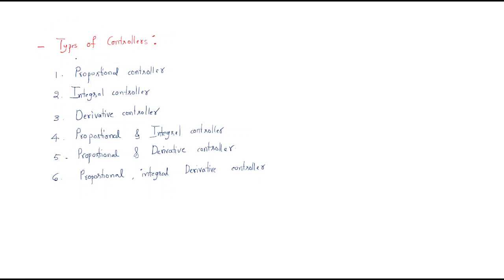There are different types of controllers available. The first is the proportional controller, represented with the symbol kp. The second is the integral controller, represented as ki/s — because integration in the time domain, when converted to the frequency domain, becomes 1/s.